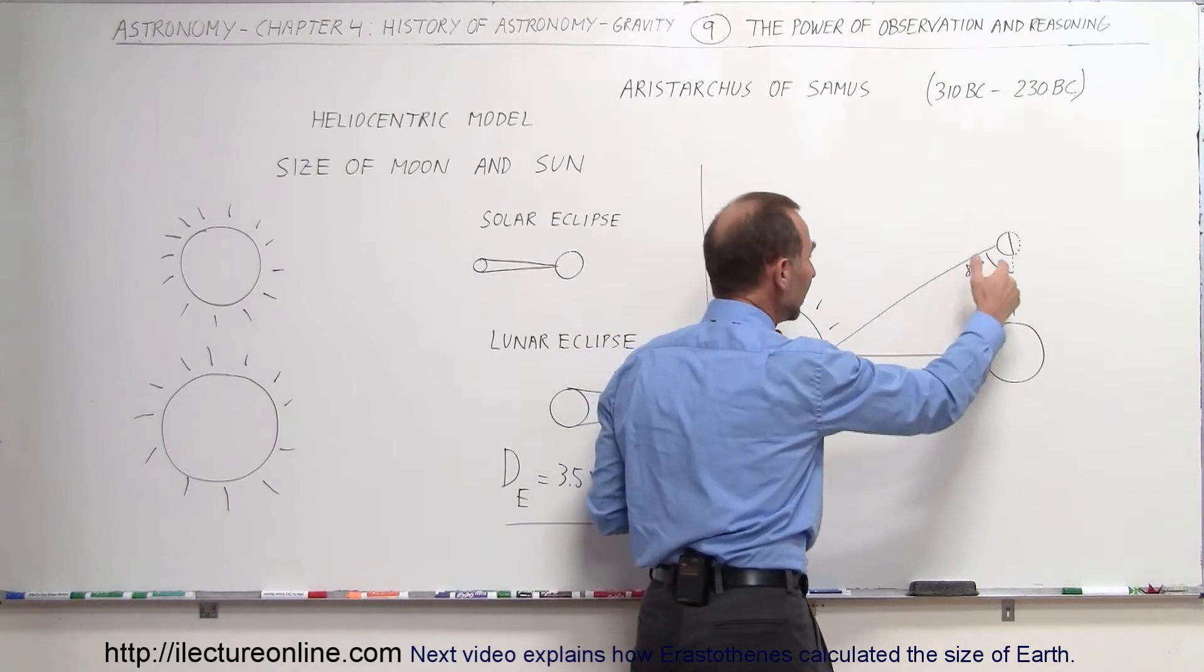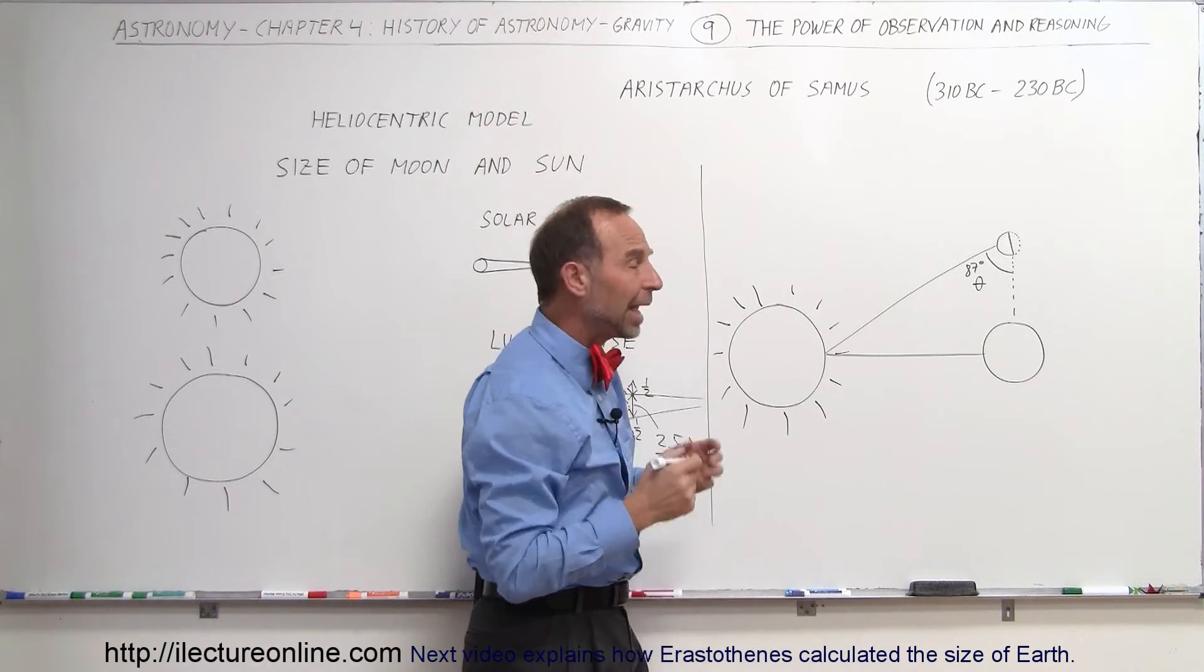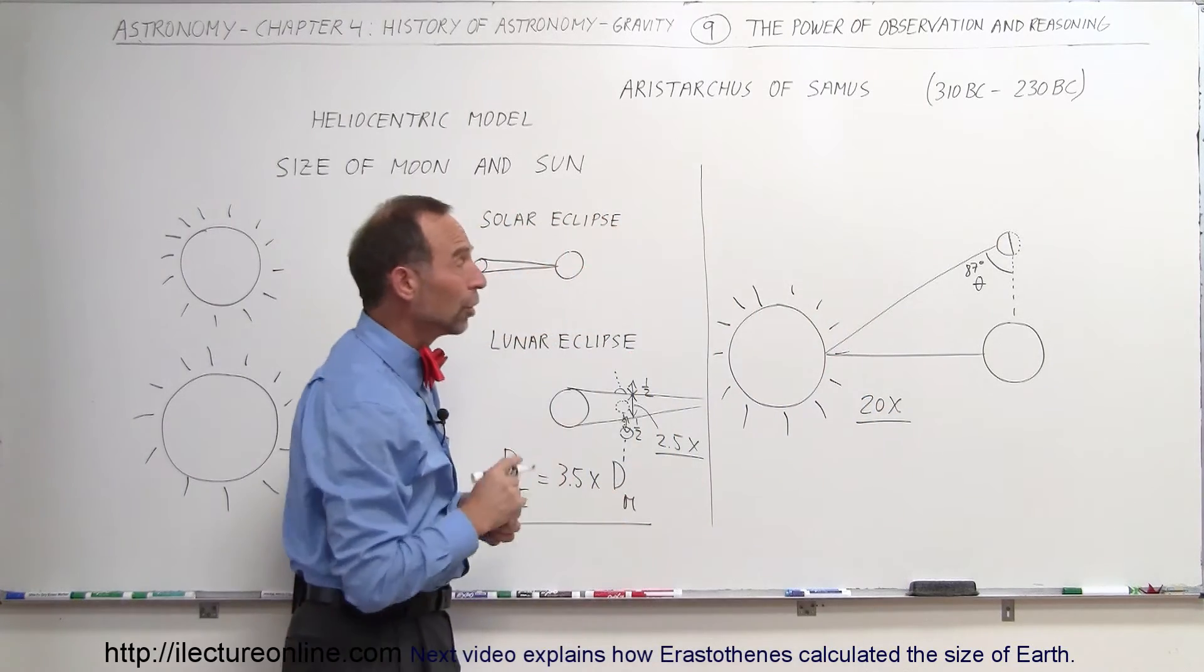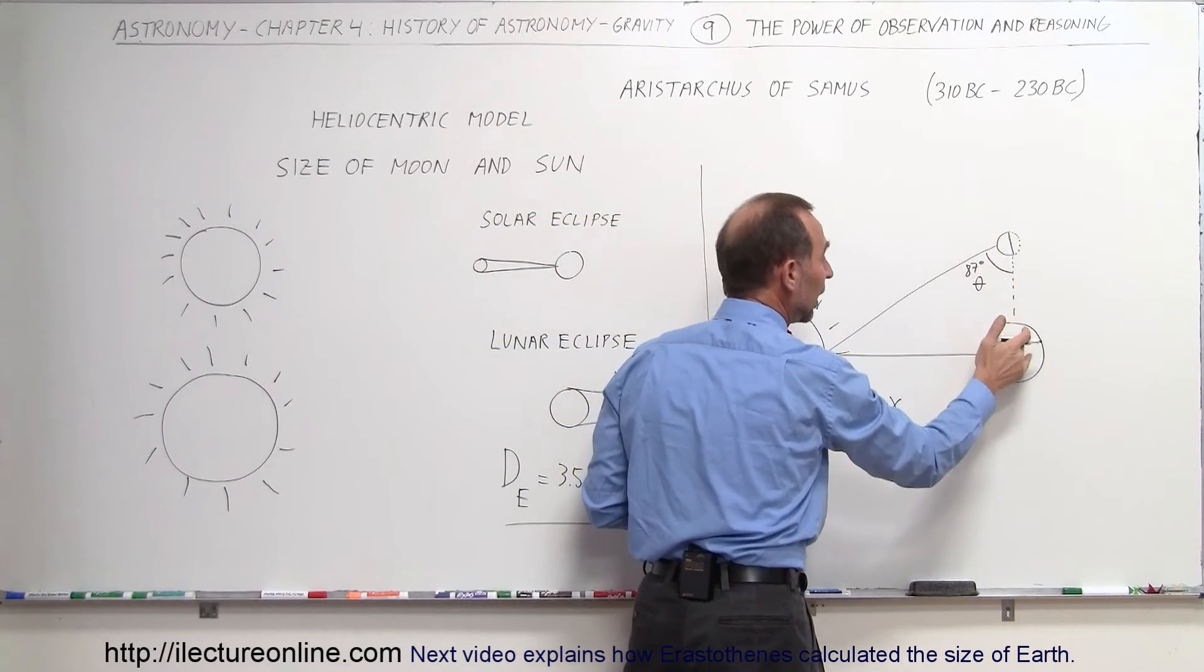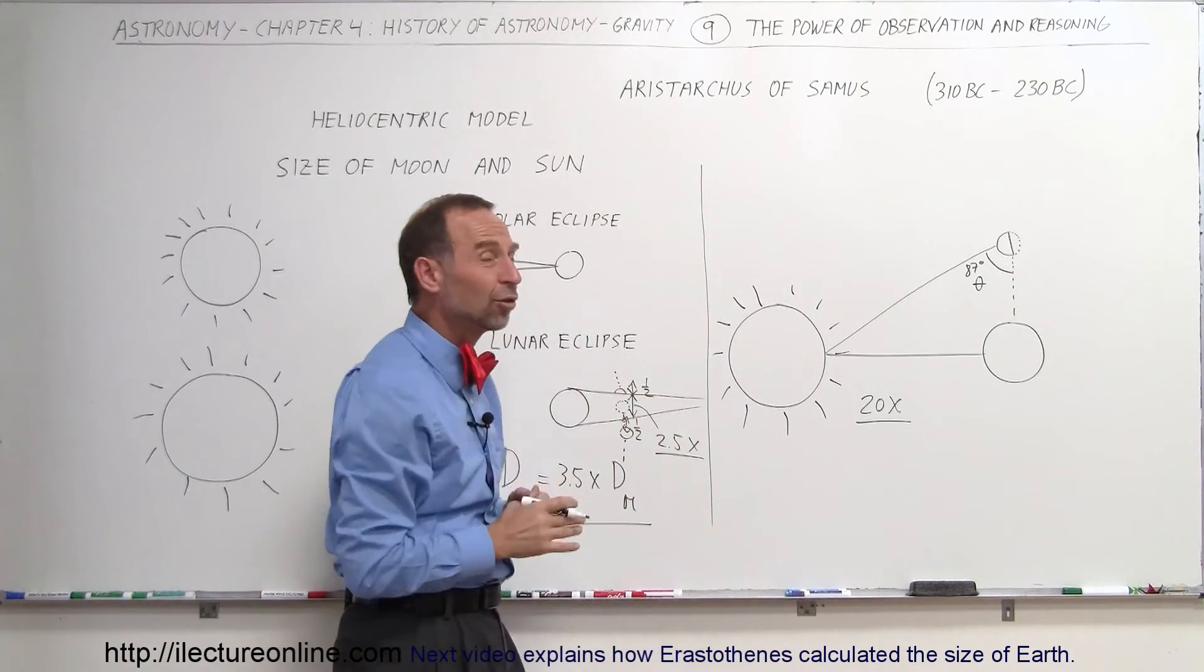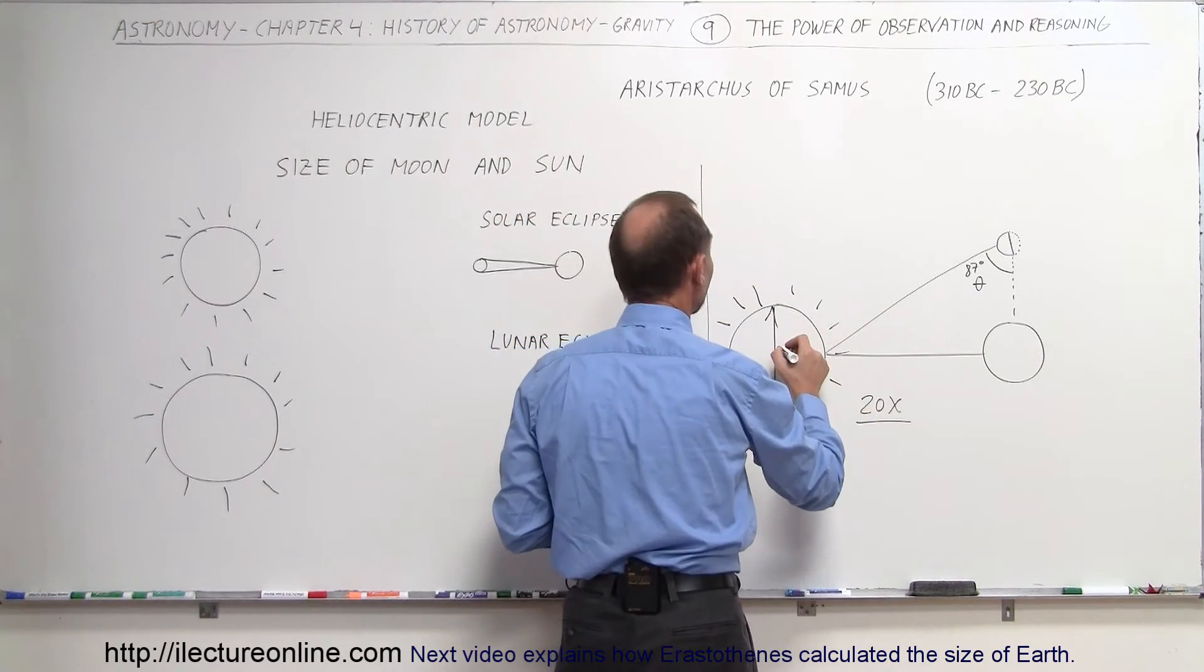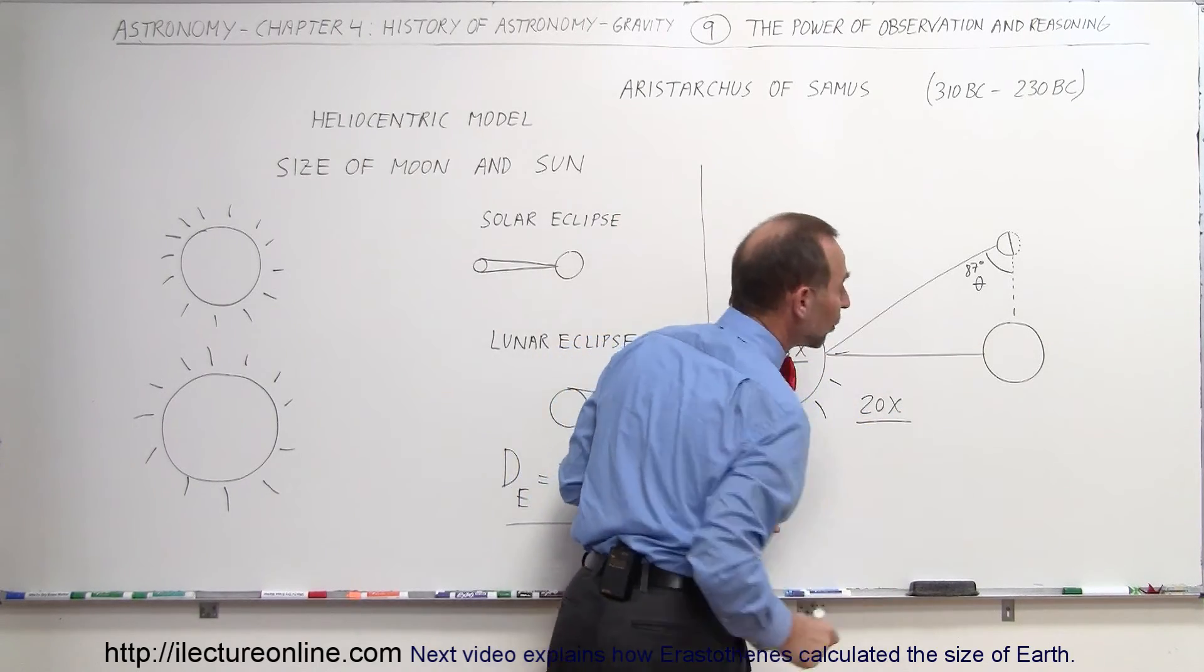So once he knew this angle, he then tried to figure out the distance to the Sun using geometry. And from that, he figured out that the Sun was about 20 times as far away as the distance from the Moon to the Earth. So 20 times larger, whatever that distance was between the Moon and the Earth, he figured that the distance to the Sun was about 20 times as far. And because of that, using geometry, he figured that the diameter of the Sun should be about 6 times the diameter of the Earth.